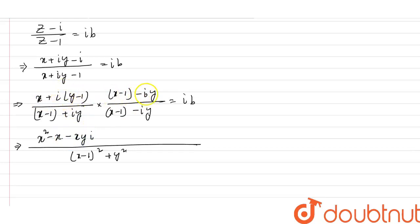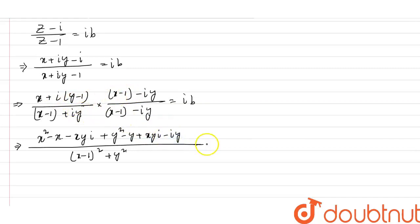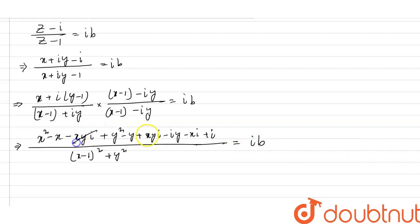So x plus iy multiplied by x minus iy. Then ai multiplied by x square: i square means minus 1, so this minus becomes plus. Now y minus 1 multiplied by y gives y square minus y. Then x minus 1 multiplied by y gives xy into i, which is xyi. And y into 1 is minus y, so minus y into i is minus iy. Next, 1 multiplied by minus xi gives minus xi; and 1 multiplied by i gives plus i. So this equals ib. The xyi terms cancel.